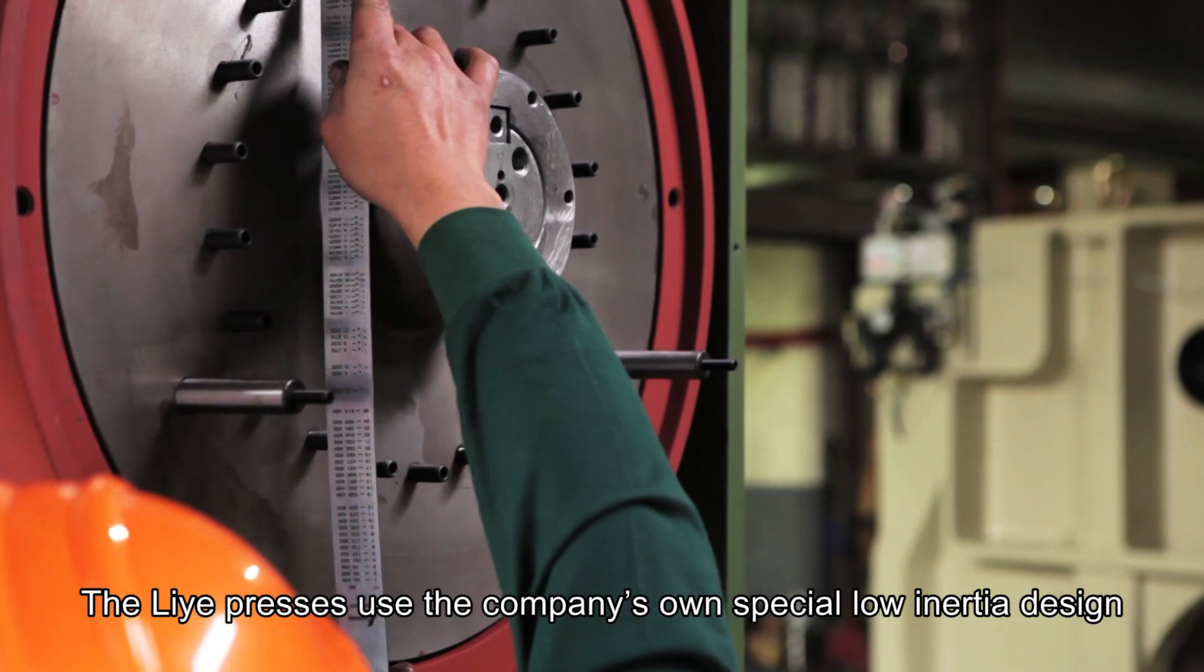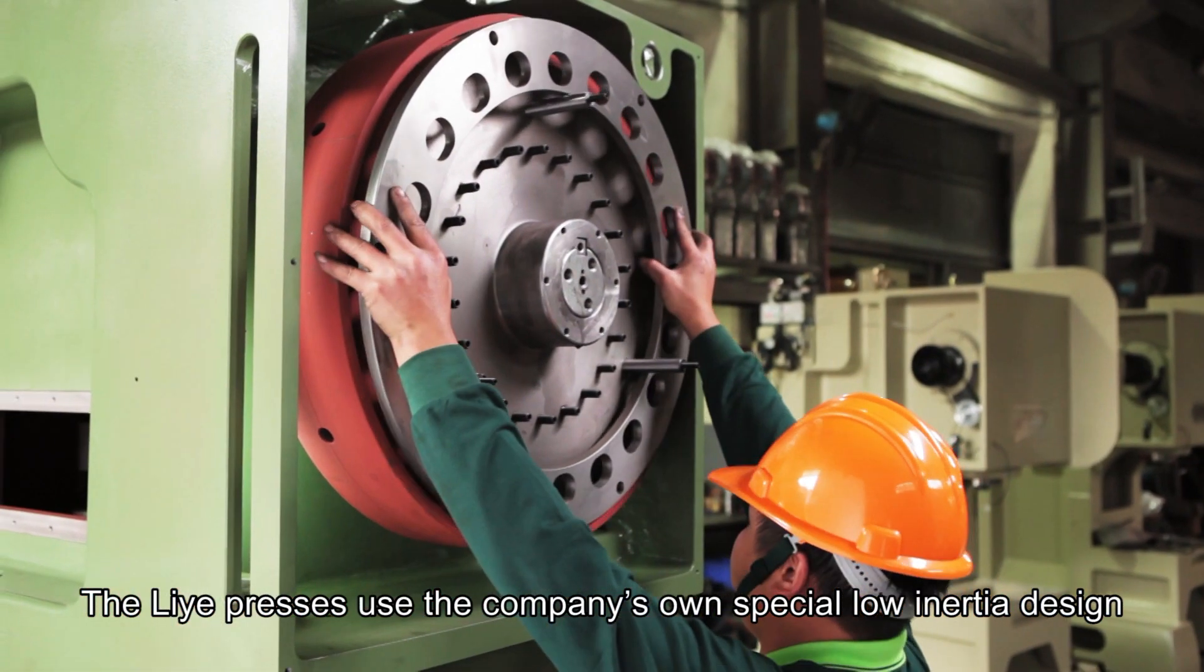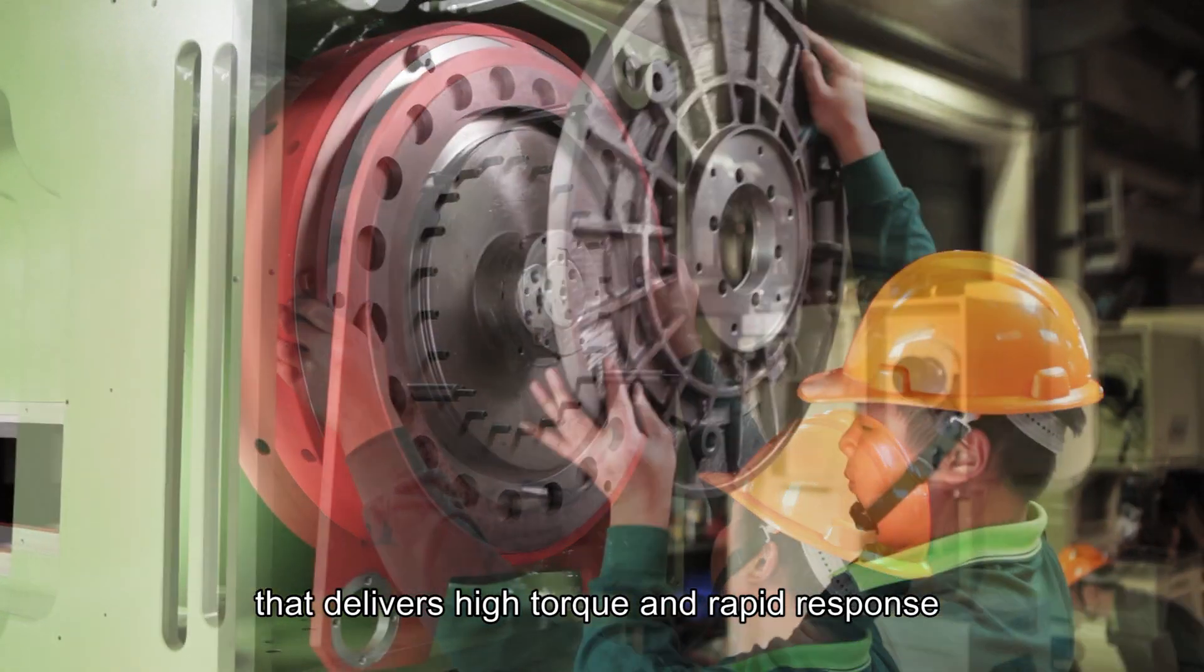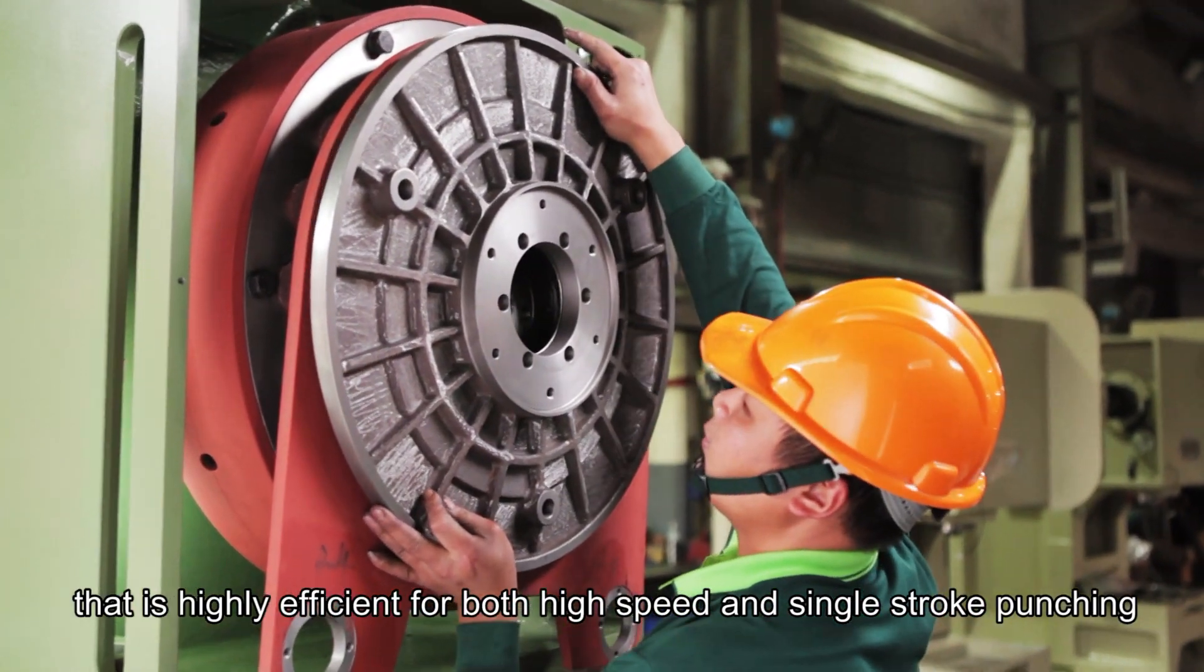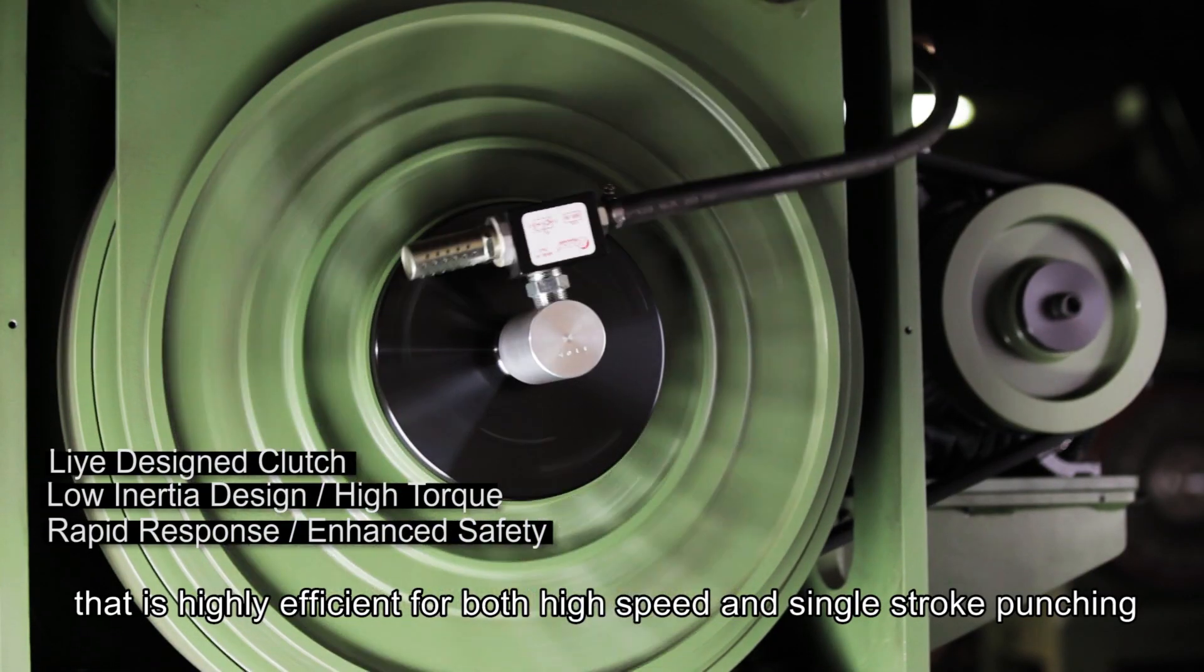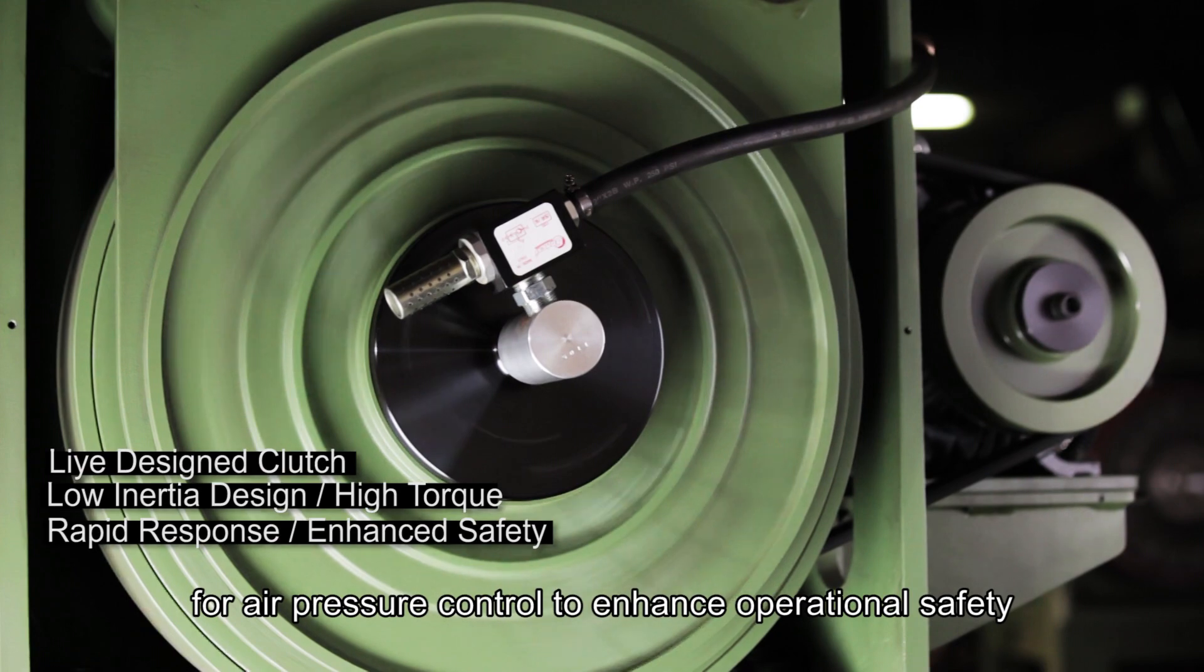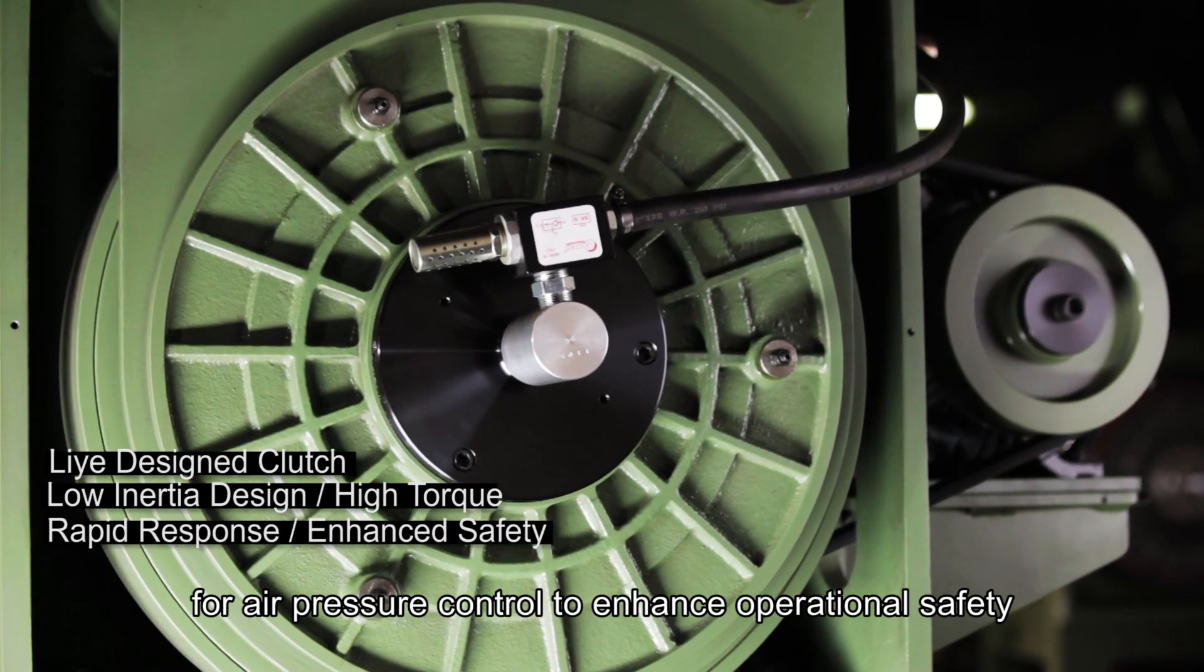The Li-Air presses use the company's own special low-inertia design that delivers high torque and rapid response, highly efficient for both high-speed and single-stroke punching. This incorporates an electromagnetic valve for air pressure control to enhance operational safety.